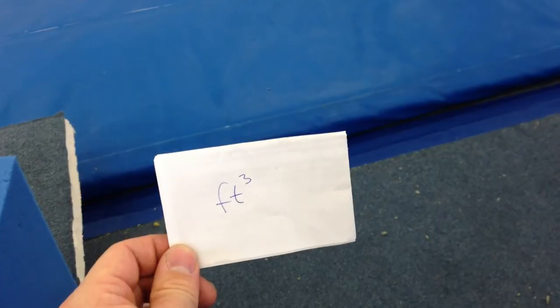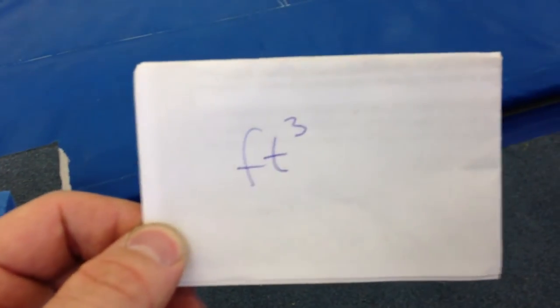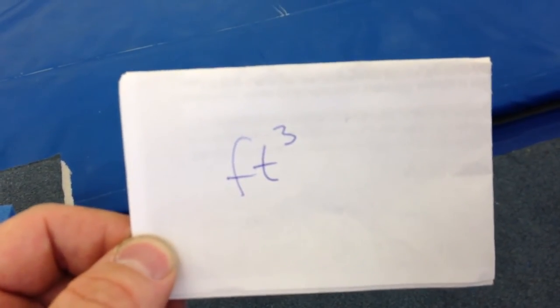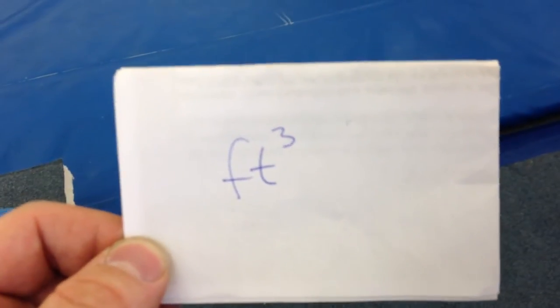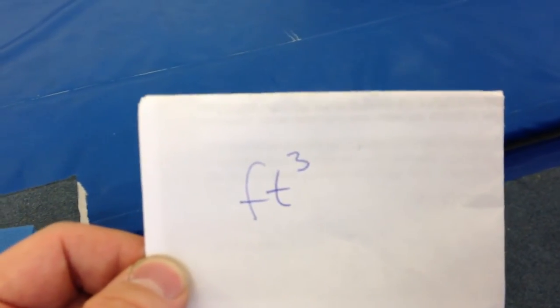A cubic foot is a measure of space. A cubic foot is written like this: ft and number 3 in the upper right hand corner. It's not 3 feet or anything else, it's pronounced as cubic foot.